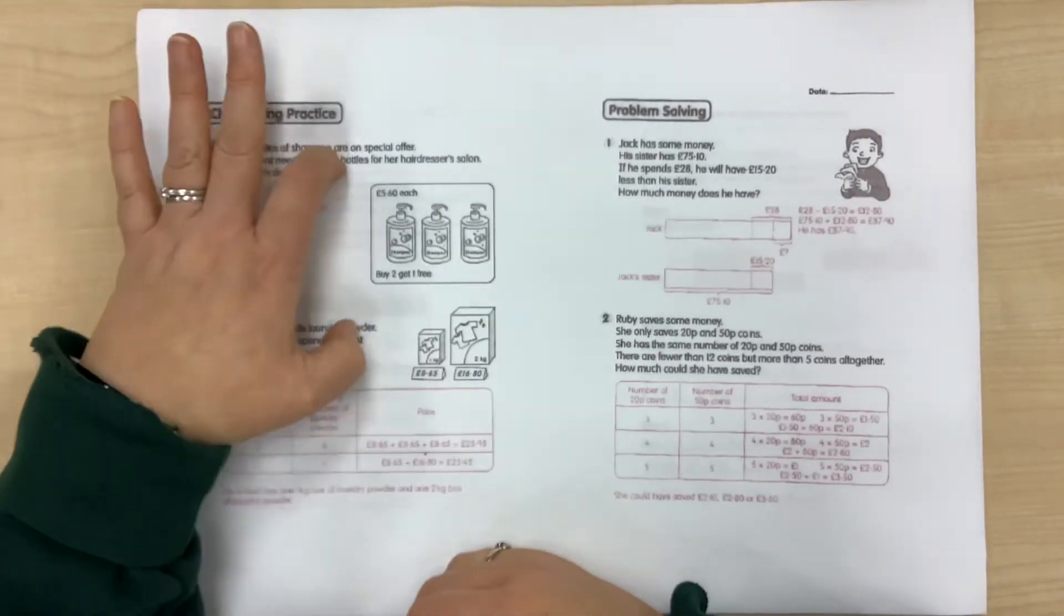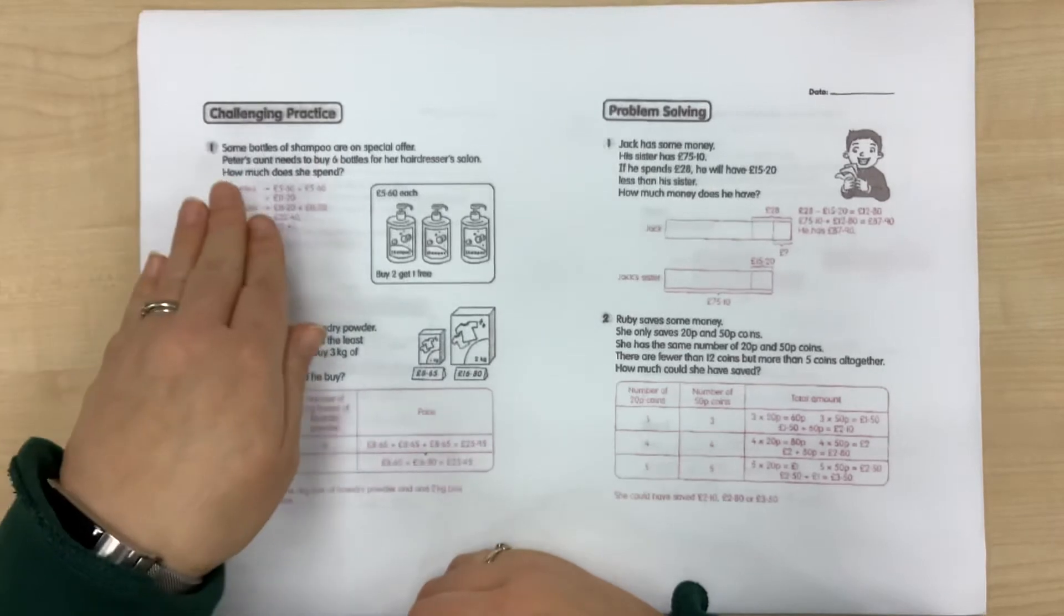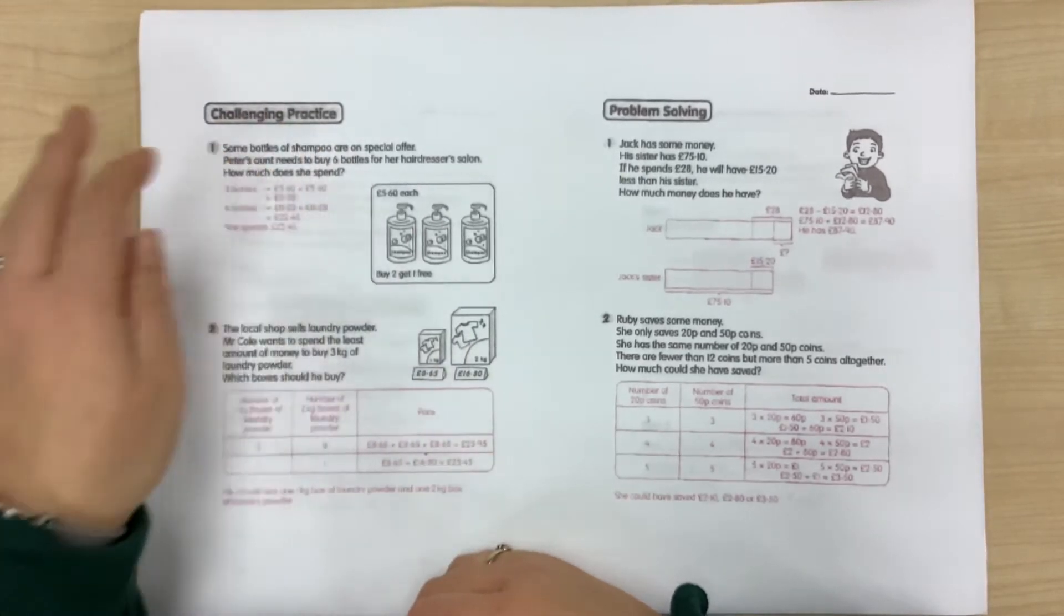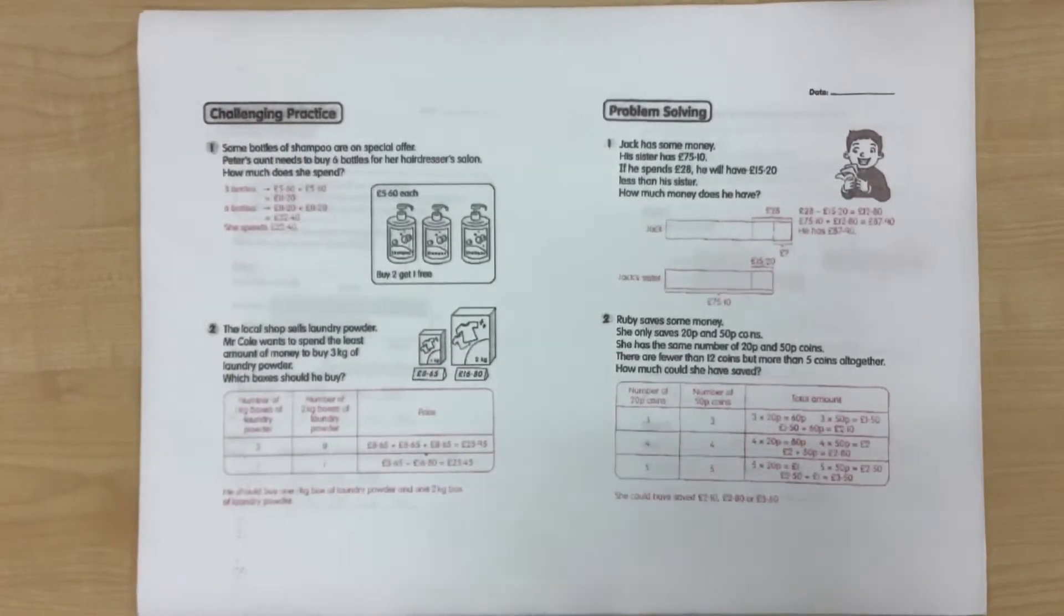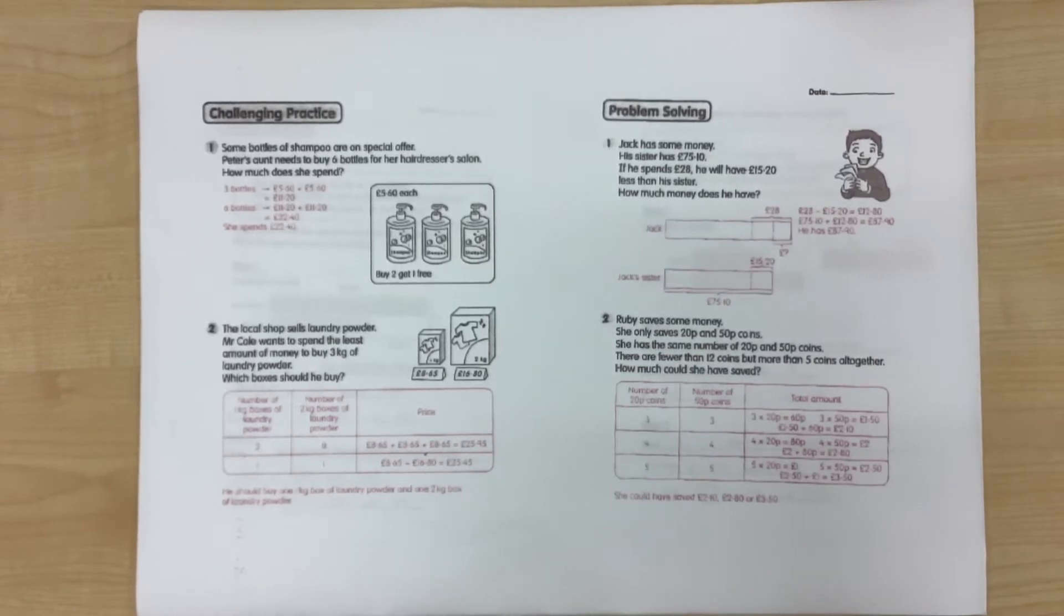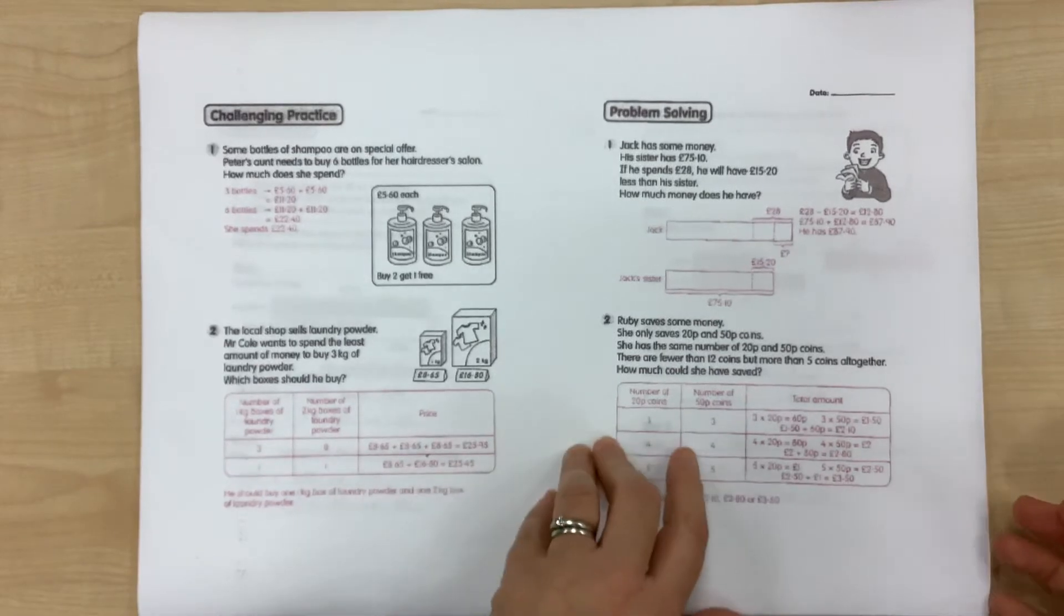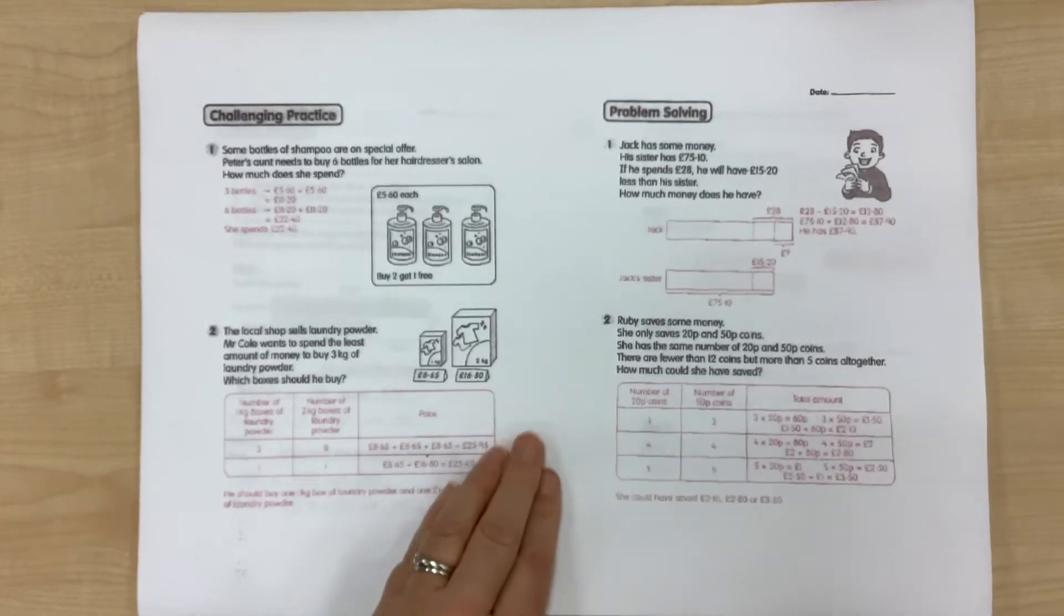So this is a great example. Read everything. Read the question twice. Read it three times if you're not sure. And I would say that with all of the word problems that you carry out, read them and read them again.